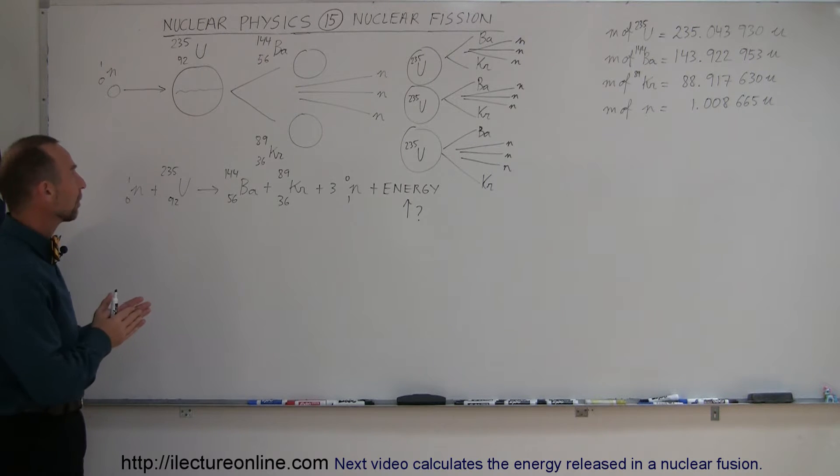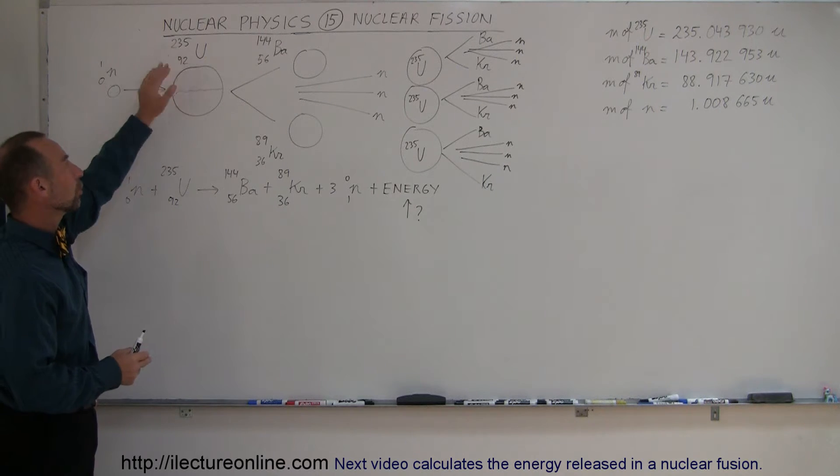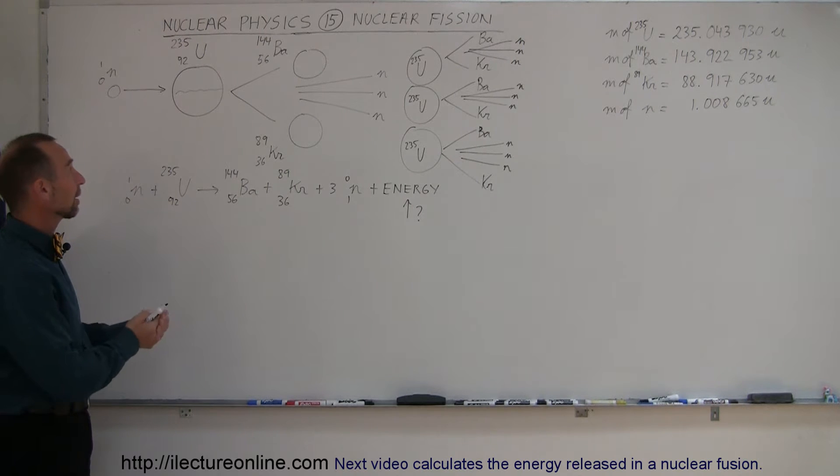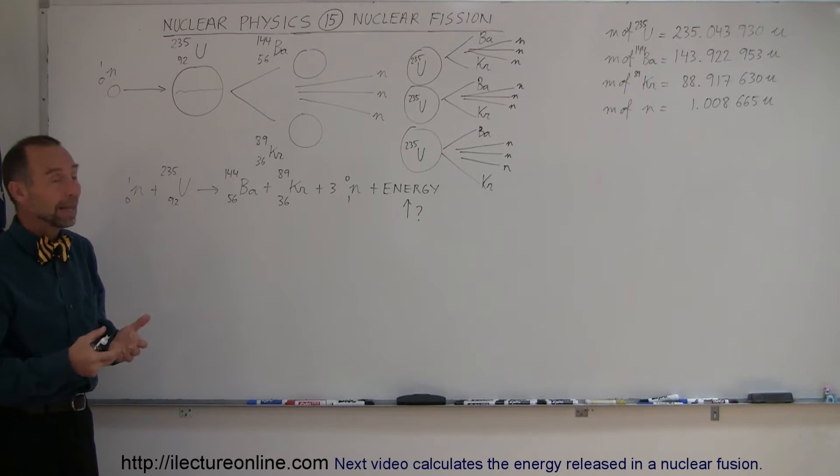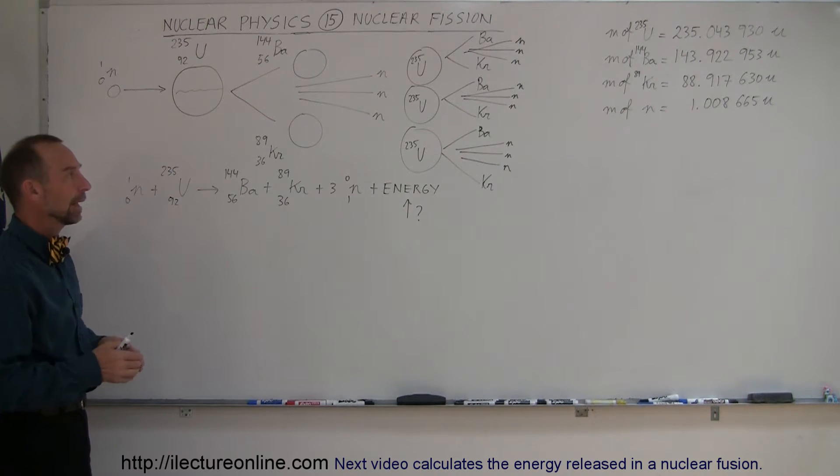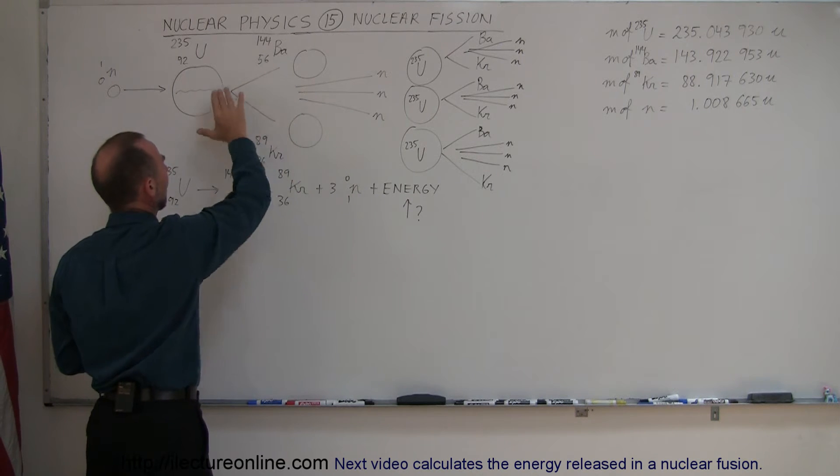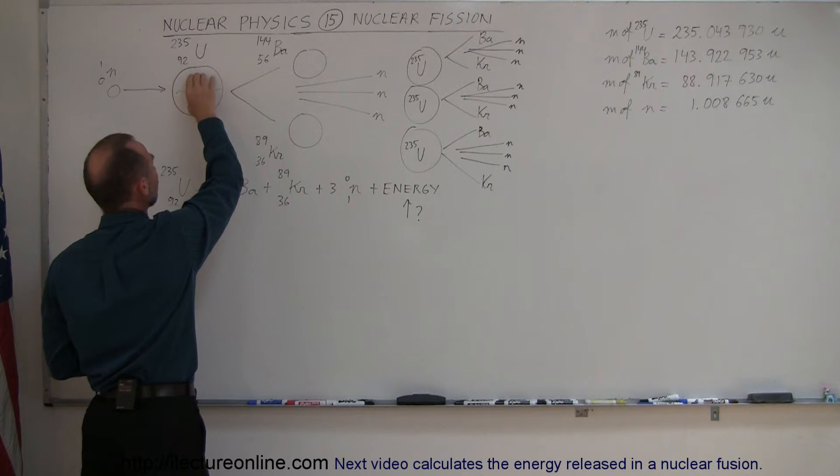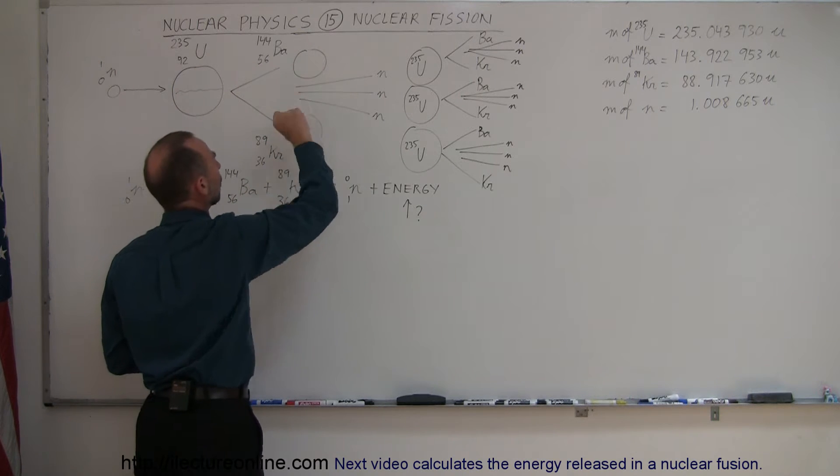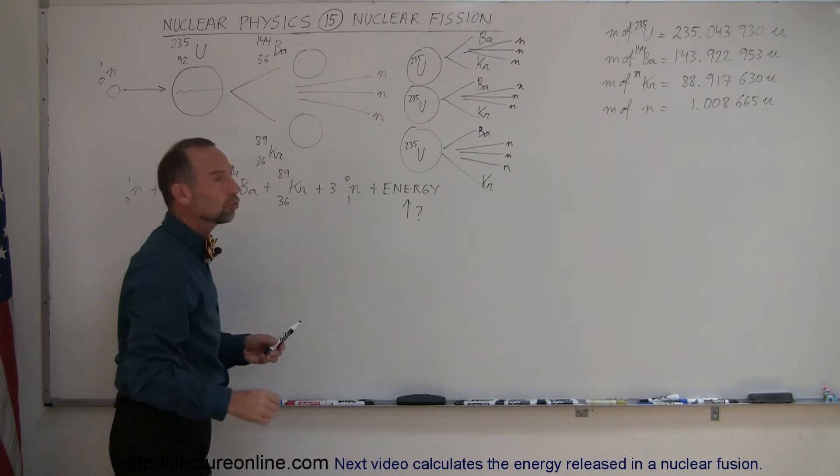Now, in the example that I'm using here, I'm using uranium-235, which is a radioactive isotope that we use in nuclear power plants and in atomic weapons. The way it works is that each time a reaction like this occurs and we have a fission reaction, uranium-235 breaking into smaller isotopes and releasing additional neutrons.